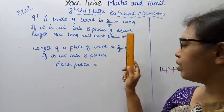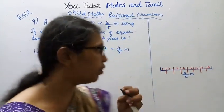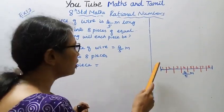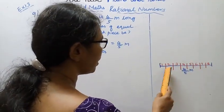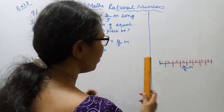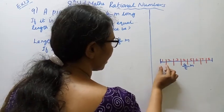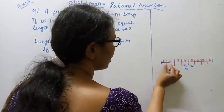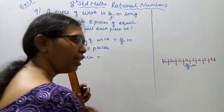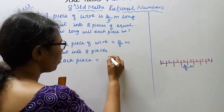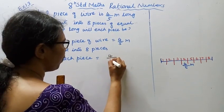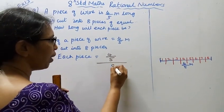A piece of wire 4 by 5 meter. It's cut into 8 pieces of equal length. Each piece will be equal length. So we need to find what is 4 by 5 divided by 8.